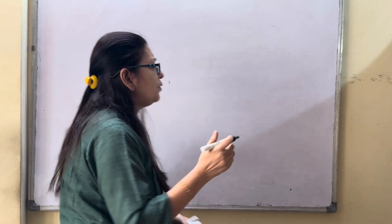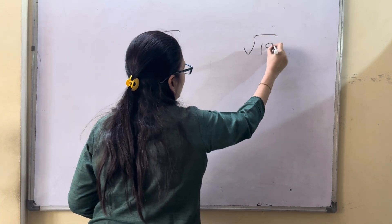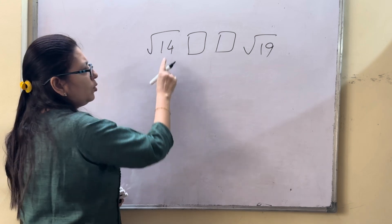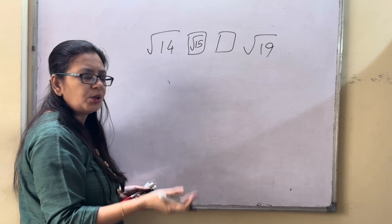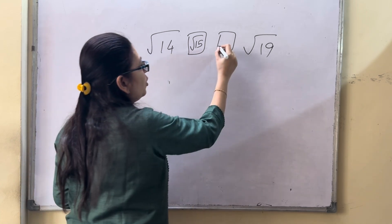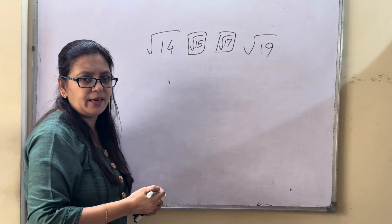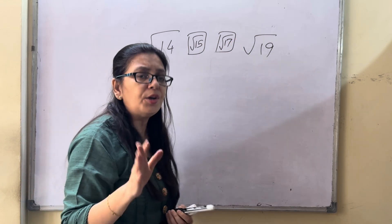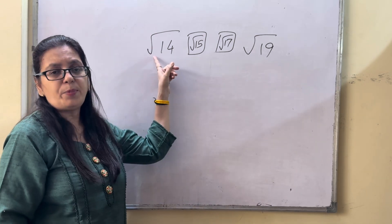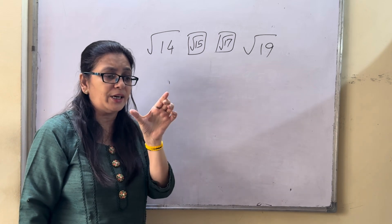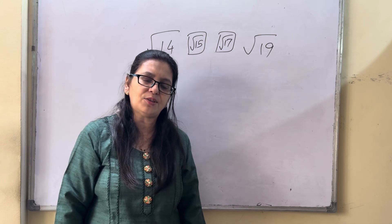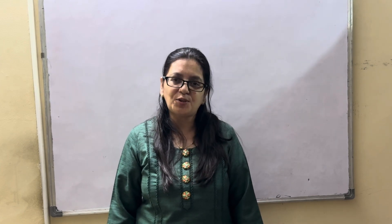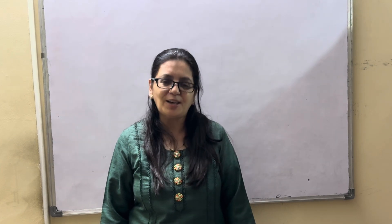The next question: find 2 irrational numbers between root 14 and root 19. After root 14 comes root 15 — that is irrational. Root 16 equals 4, so we can't take that. Root 17 and root 18 we can take. If you don't get the answer easily, square them, put under root form, and you'll get a wider gap to find irrational numbers. We have completed the exercises from R.S. Agarwal. Stay connected in my next video for the rest. Till then, bye, take care, and thanks for watching.